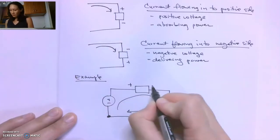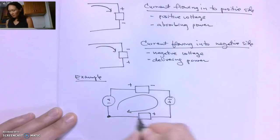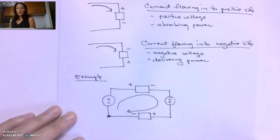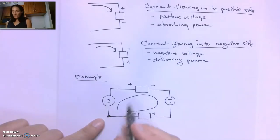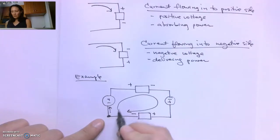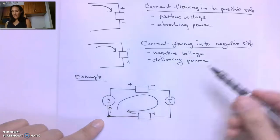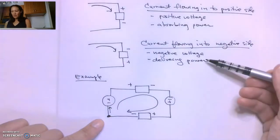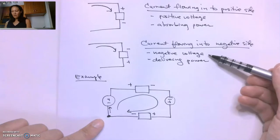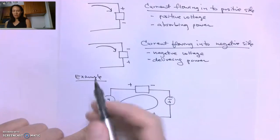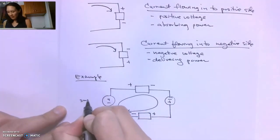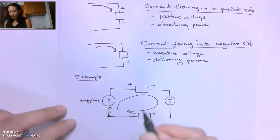The voltage drops are in this orientation, plus and minus. Going around the loop, starting at the bottom left, as the current travels in this direction, it is going to enter into the negative side of the voltage source. So if it goes into the negative, that means this source is a negative voltage and it is delivering — or supplies — power.